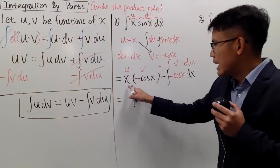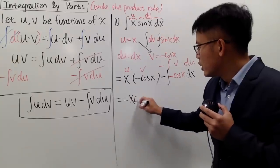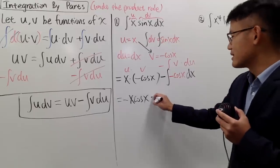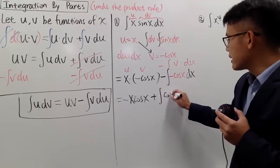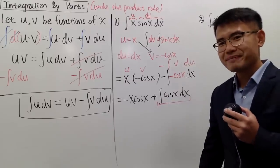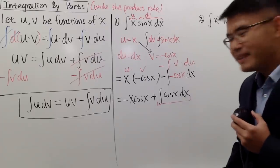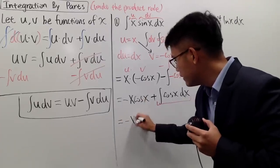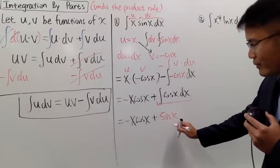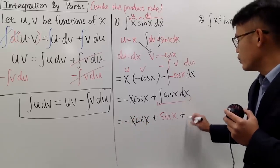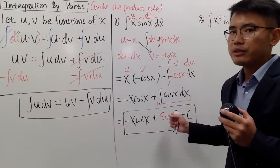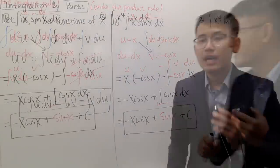Cleaning things up: we have −x·cos(x), then negative times negative gives positive, so we add the integral of cos(x) dx. The integral of cos(x) is sin(x), so we write −x·cos(x) + sin(x) + C. That's our final answer. If you differentiate this, you get x·sin(x), confirming it's correct.